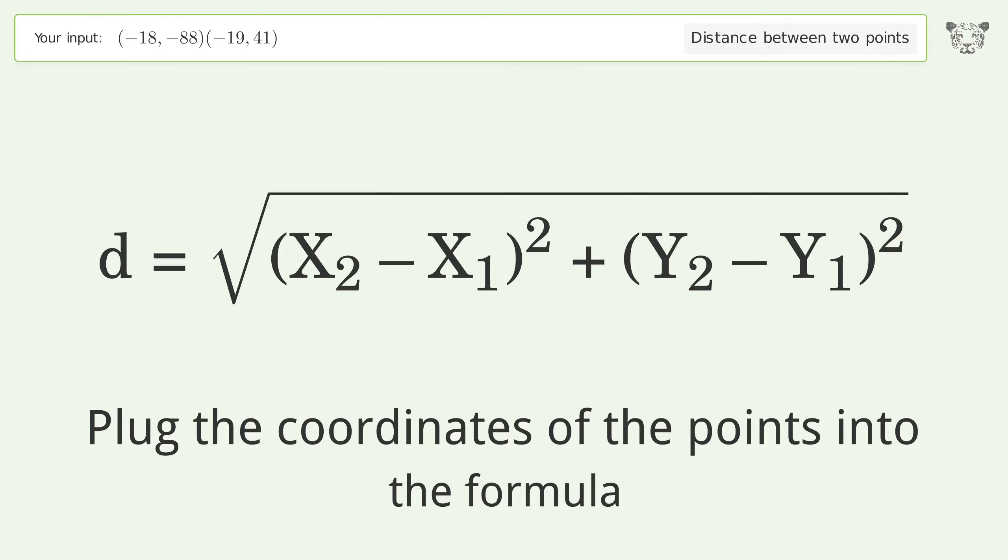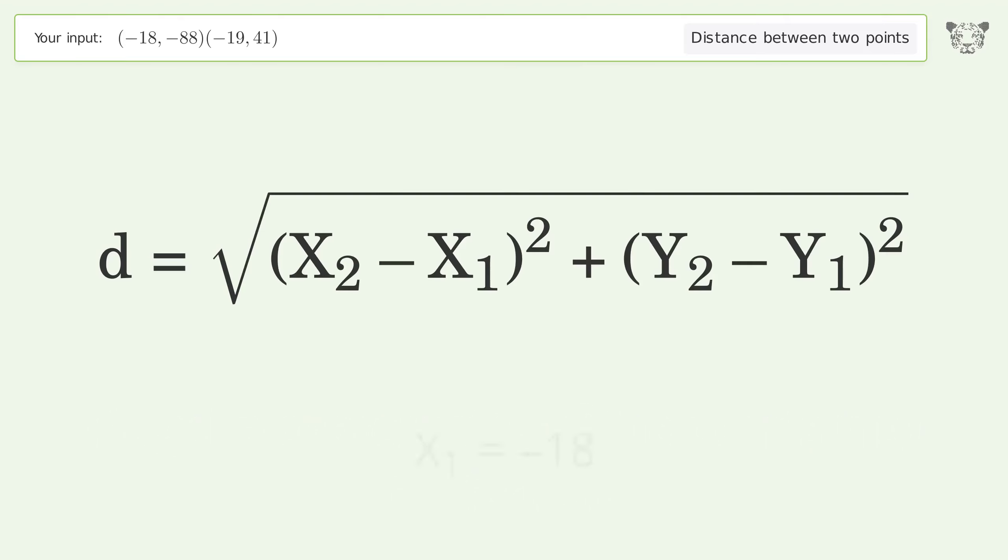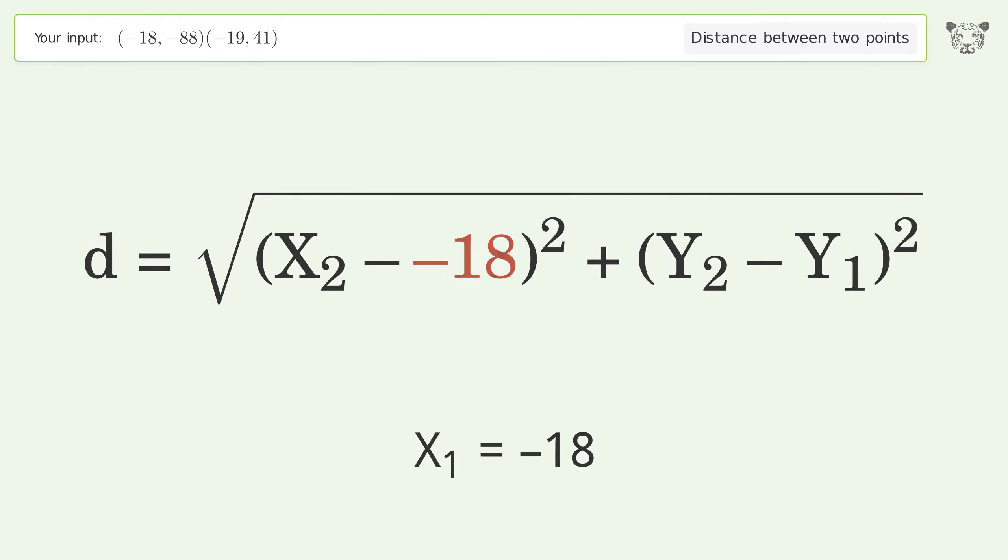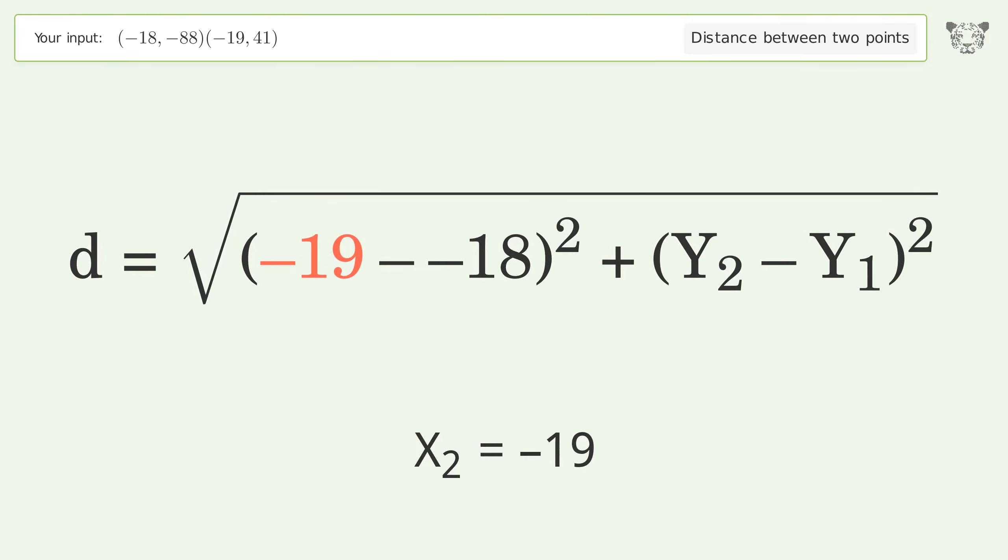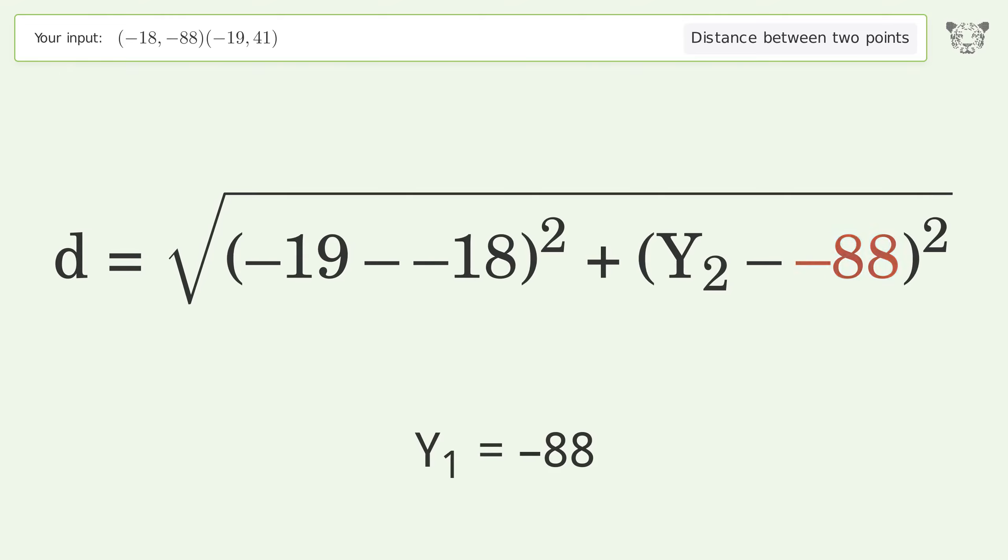Plug the coordinates of the points into the formula. x1 equals negative 18, x2 equals negative 19, y1 equals negative 88, y2 equals 41.